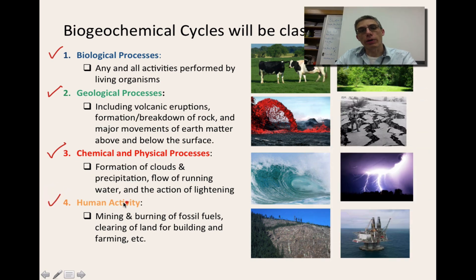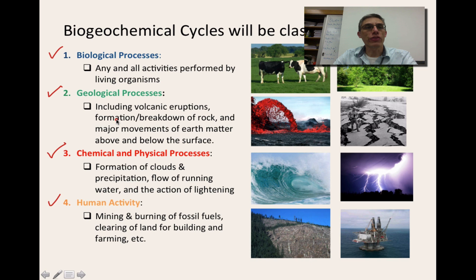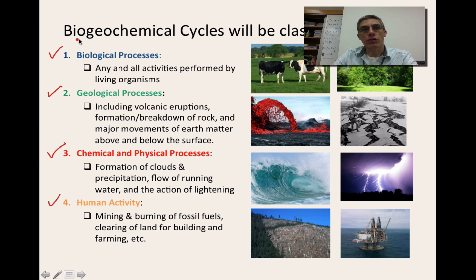The fourth way to classify a biogeochemical cycle is human activity — things like mining and burning of fossil fuels, clearing of land for building and farming, etc. One helpful tip: if you look at the word biogeochemical cycle, three of the four classification schemes are already in the word itself: bio (biological), geo (geologic), and chemical (chemical and physical processes). The only one you really need to remember separately is the fourth one — human activity.